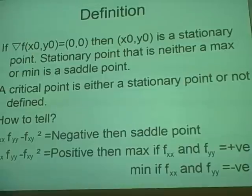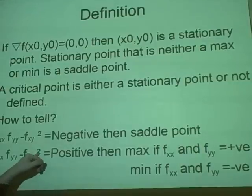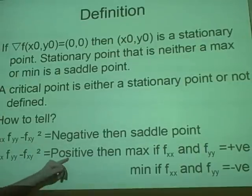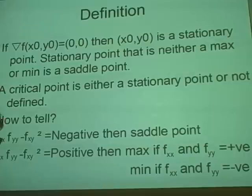Also we have here, partial derivative with respect to x twice times partial derivative with respect to y twice times the negative of the partial derivative with respect to x and then respect to y, squared. If this is positive, then you've found a maximum point.